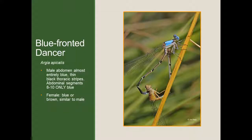Finally, we have the blue-fronted dancer — a very small, very common damselfly species. The thorax of the male is almost entirely blue, but with a very thin black thoracic stripe on the shoulder area behind the eye. Only abdominal segments 8 through 10 are blue, and for many damselflies the difference can be a single abdominal segment. The female of this species, unfortunately, takes many different color forms — they can be blue, or brown, or similar in coloration to the male.